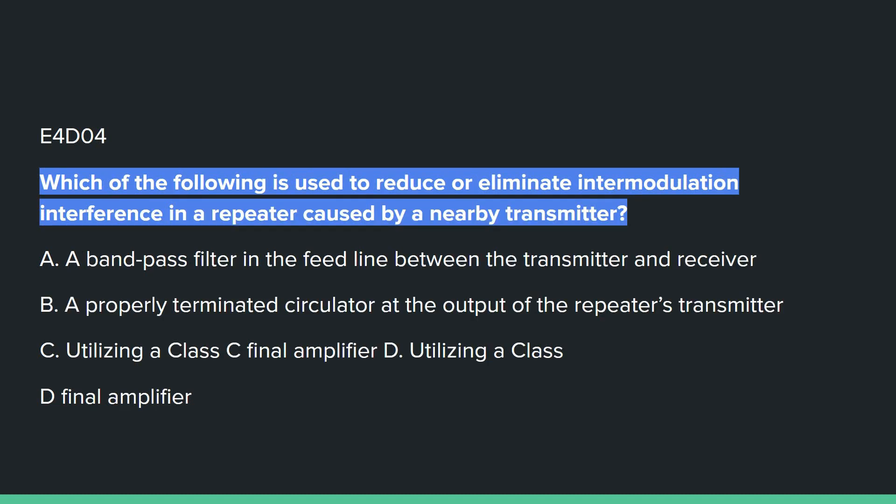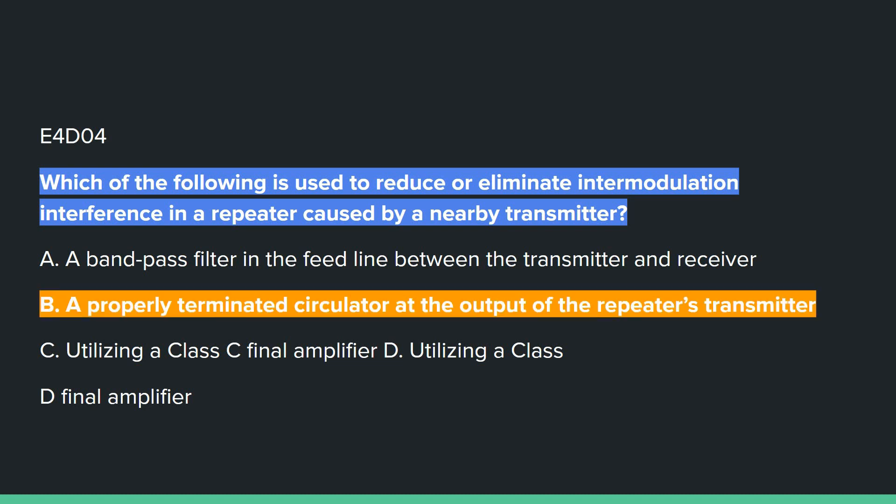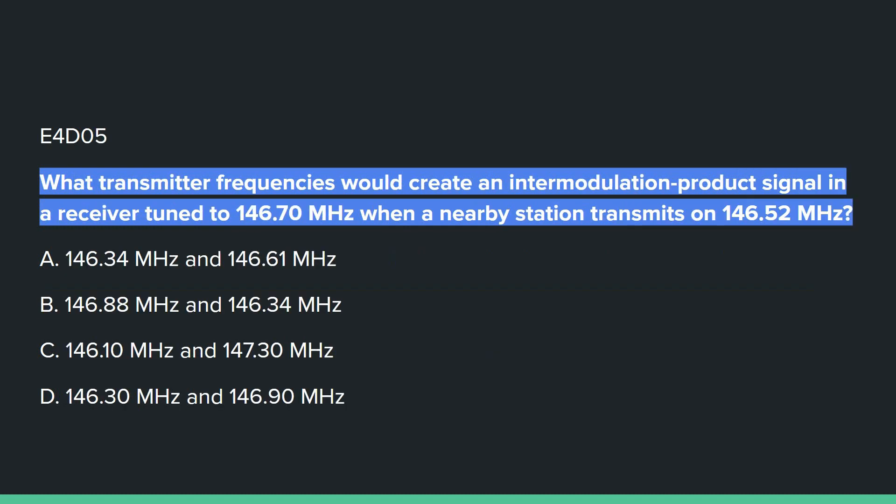E4D04: Which of the following is used to reduce or eliminate intermodulation interference in a repeater caused by a nearby transmitter? Answer B: a properly terminated circulator at the output of the repeater's transmitter.